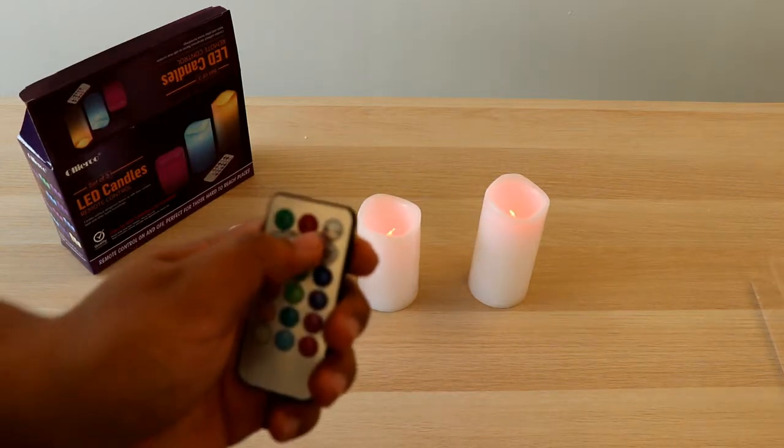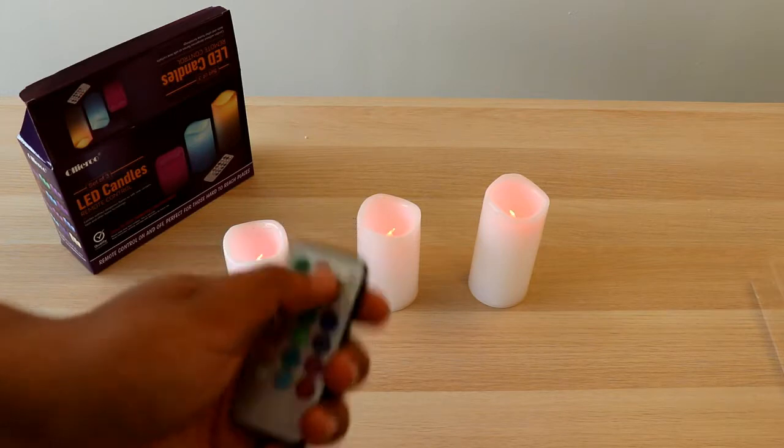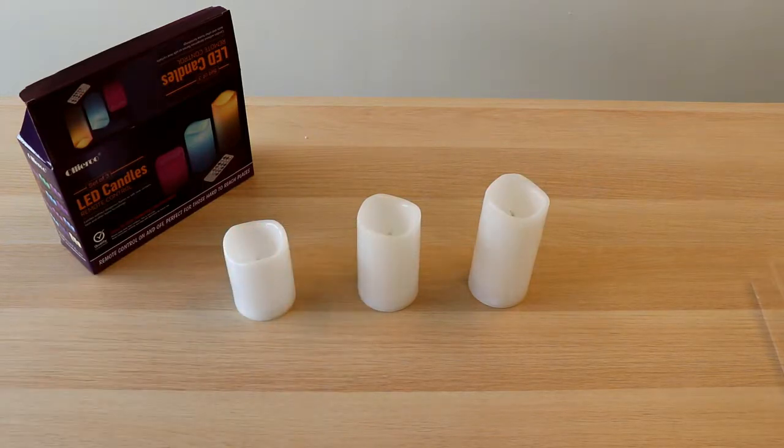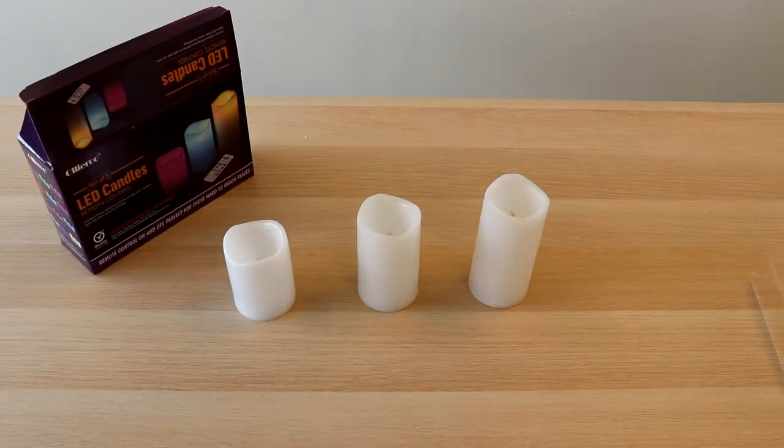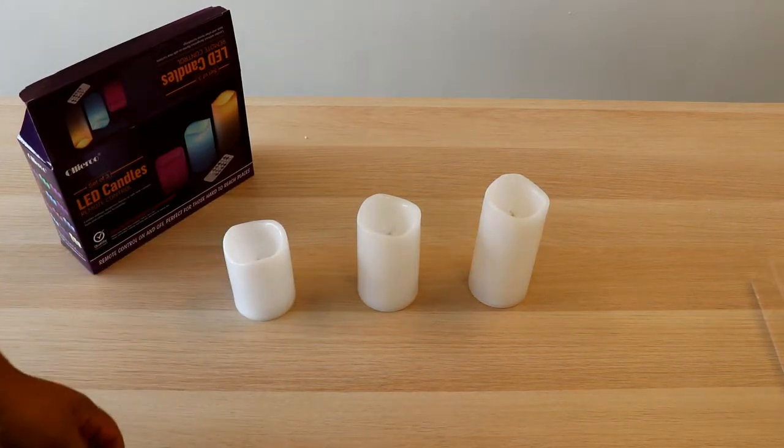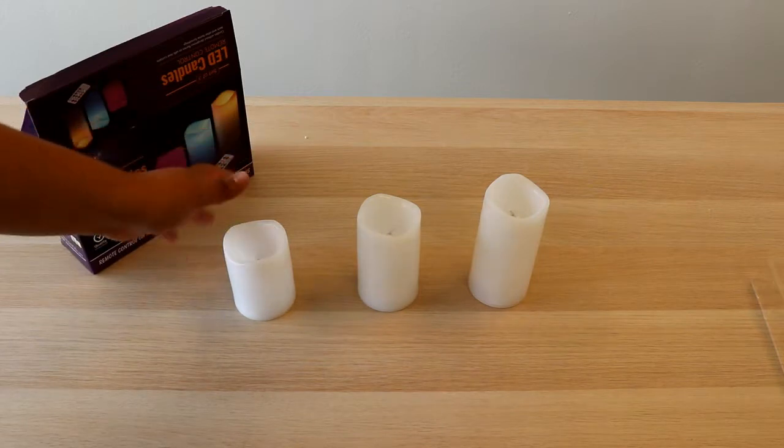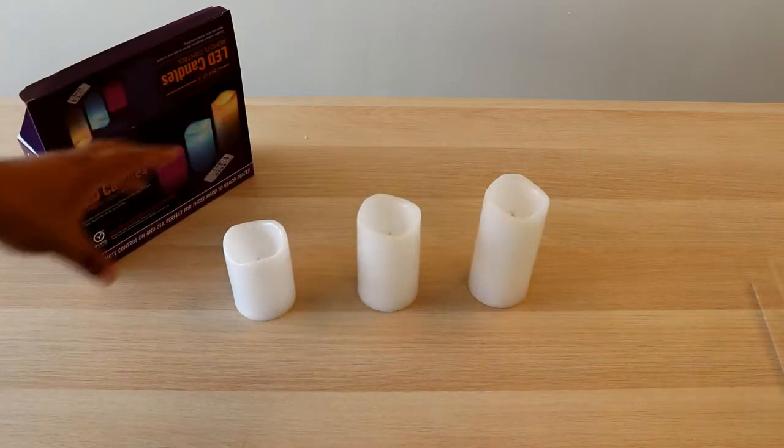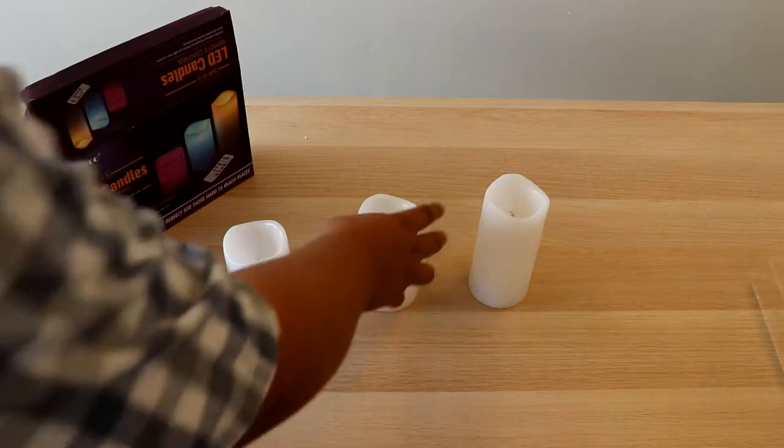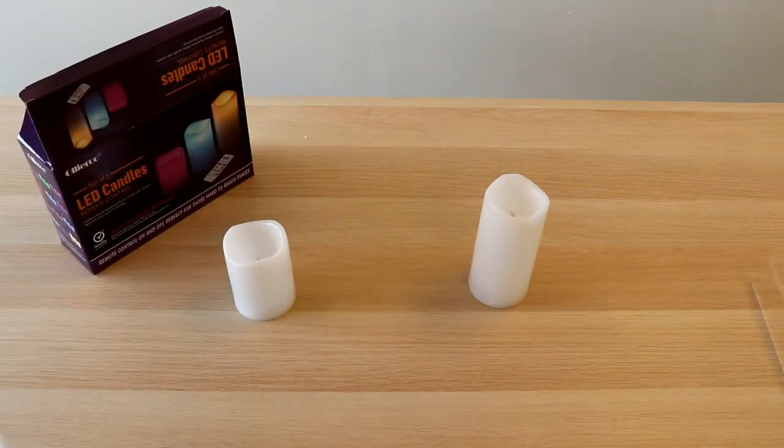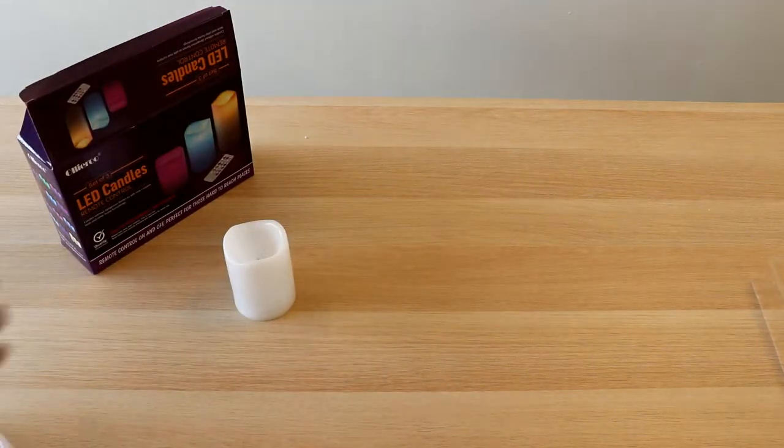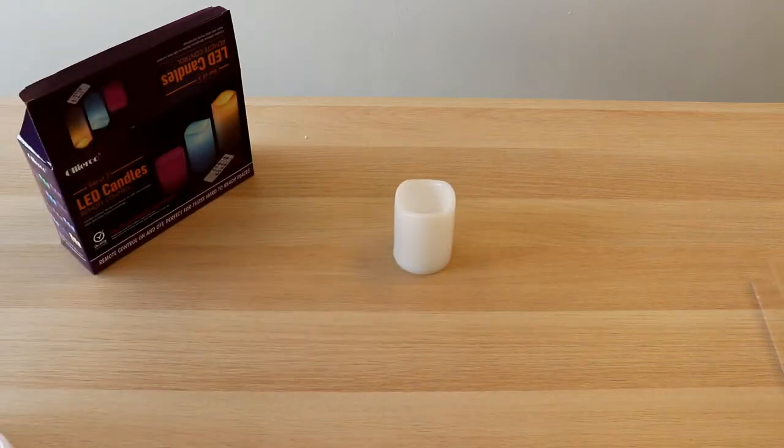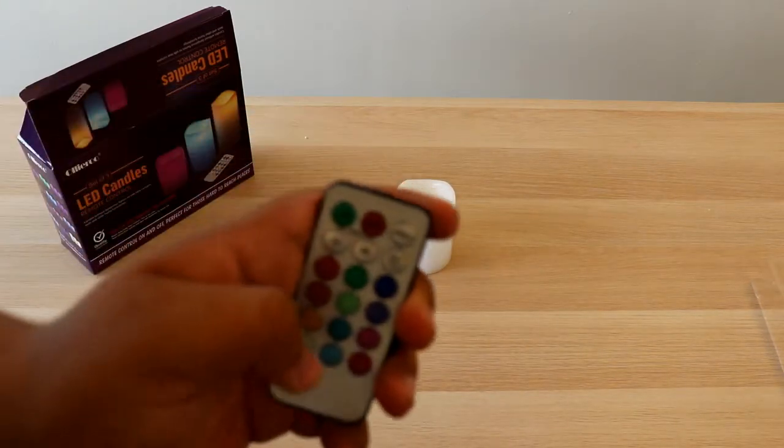If you want them all turned off, just hit the off button right there. They all turn off. Now say for instance, if they're all spread out throughout the room, you can turn them on individually. So let's put this candle over here. I'm going to put these to the side. And I'm going to turn this one on. So that one's on.